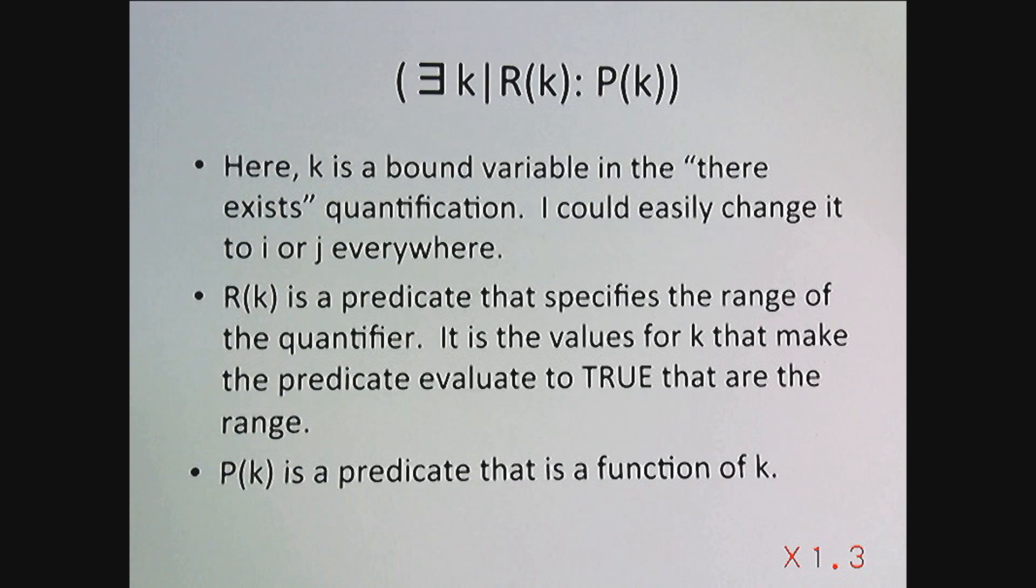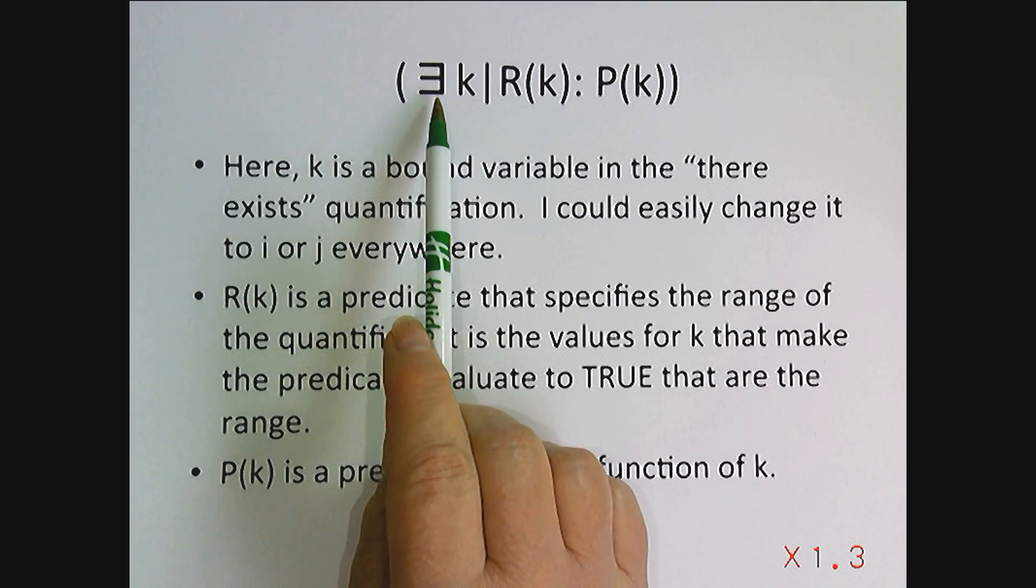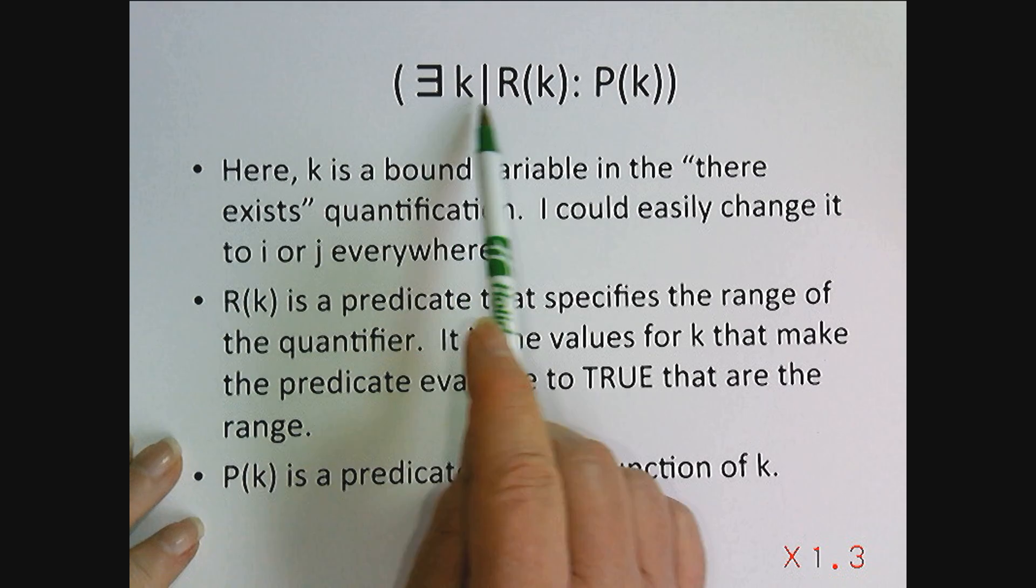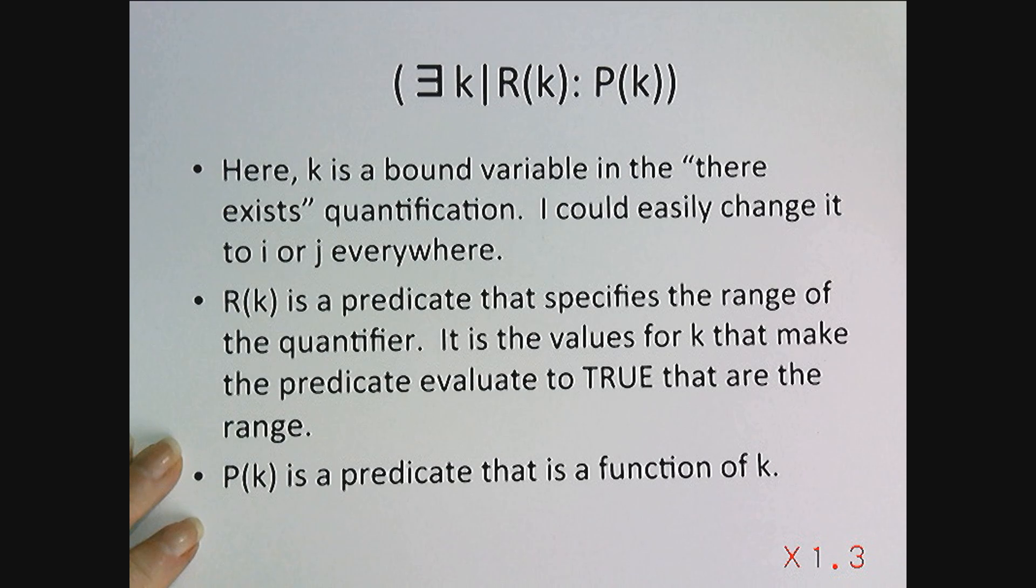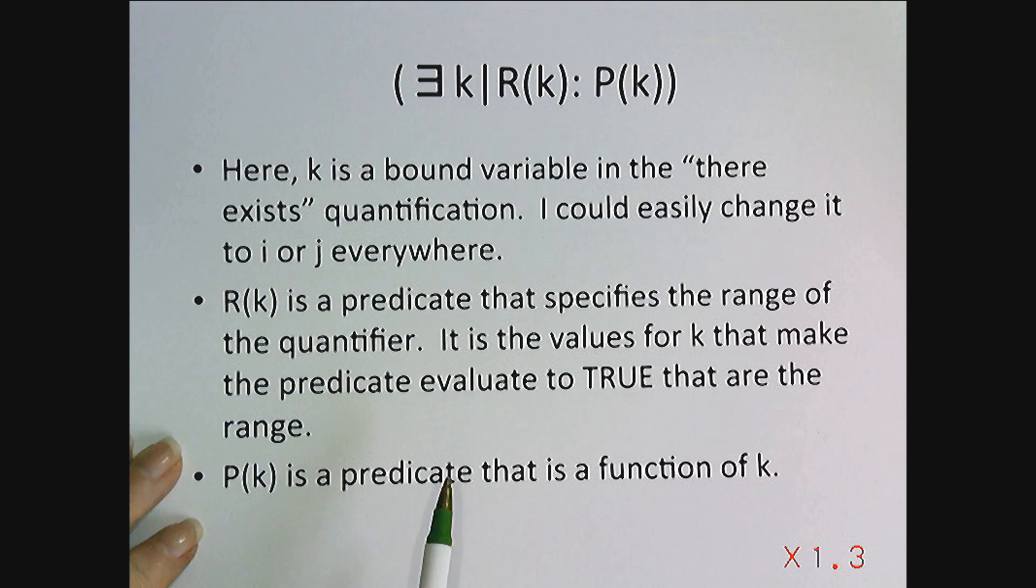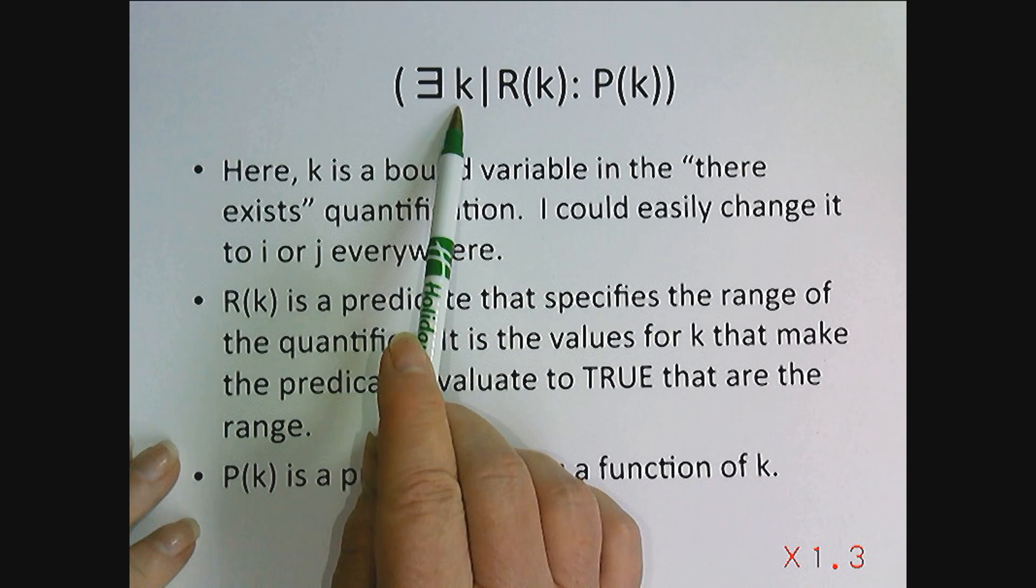Just like with universal quantifiers, the variable k is bound within the quantification and R is a predicate that describes the range and P of k is a predicate that's a function of the bound variable k.